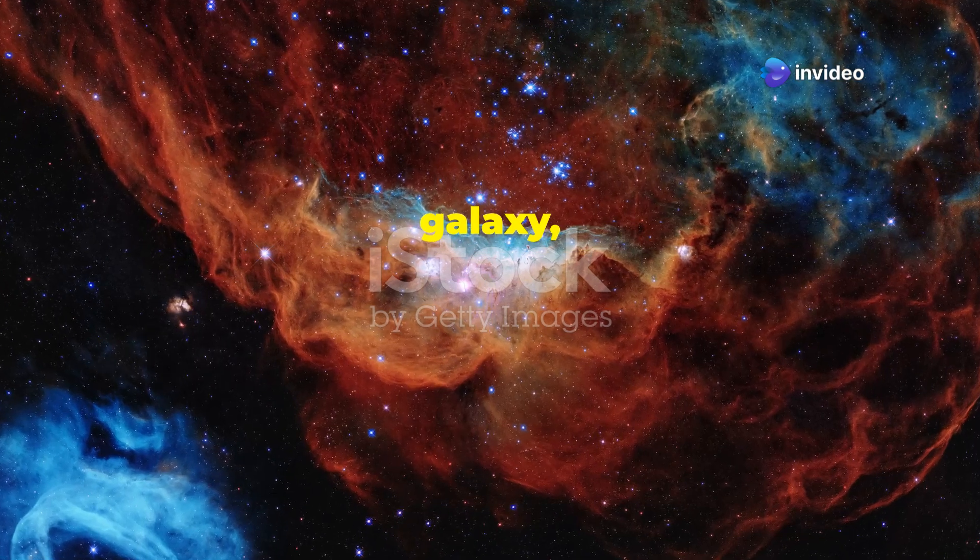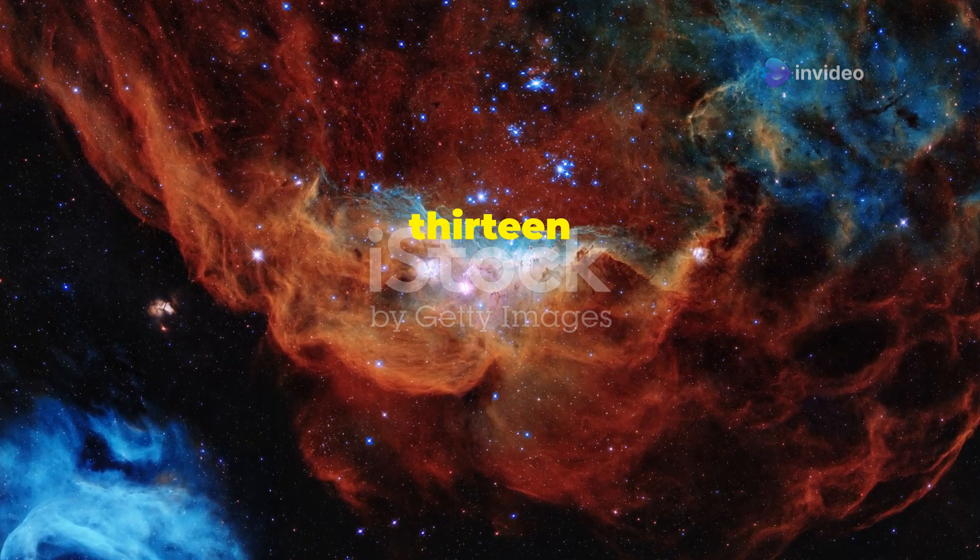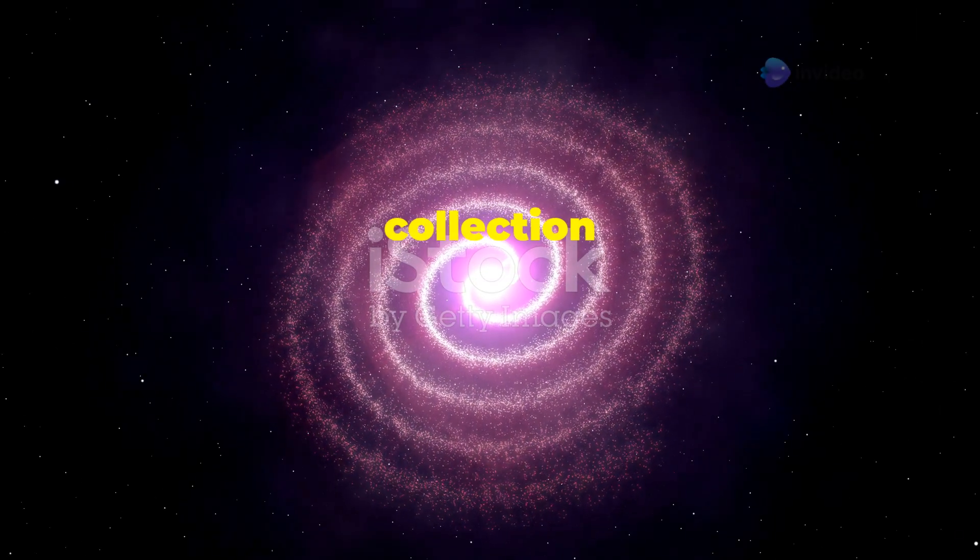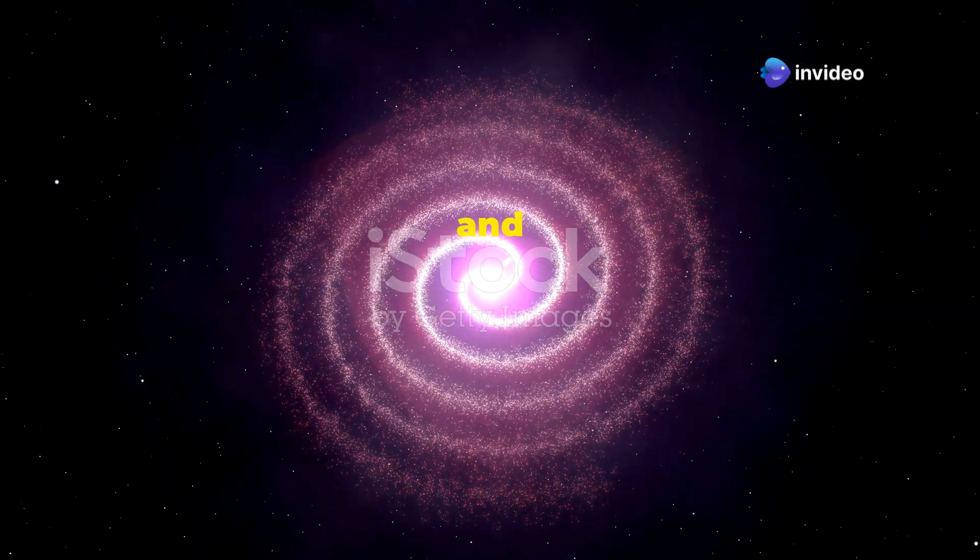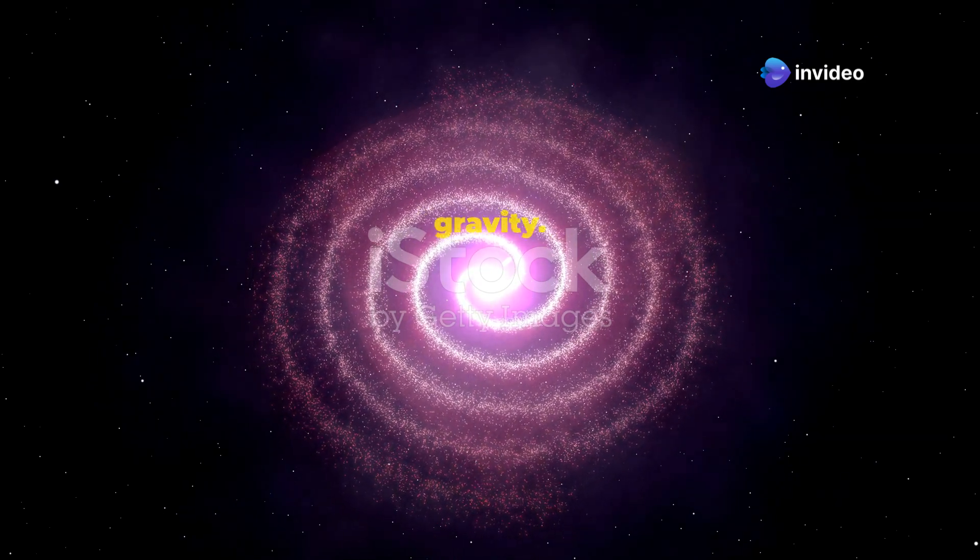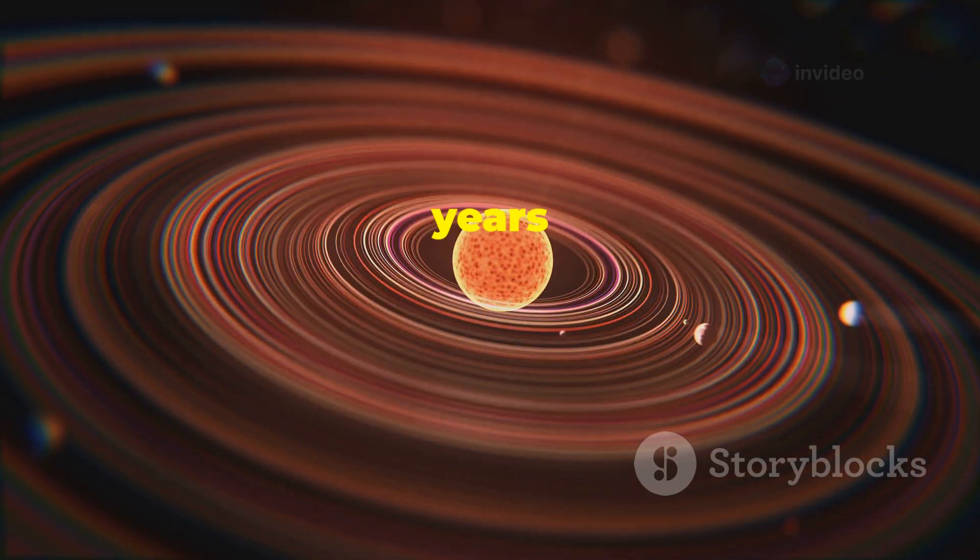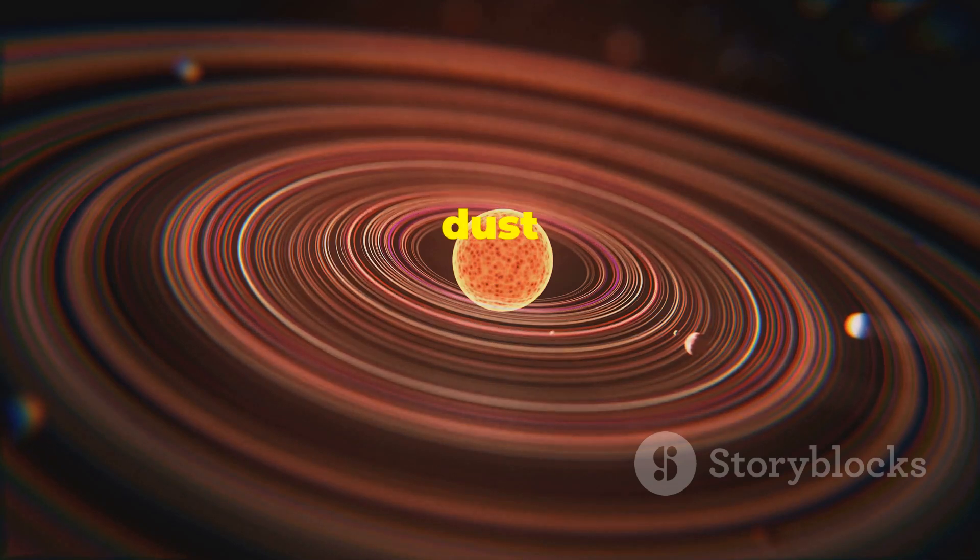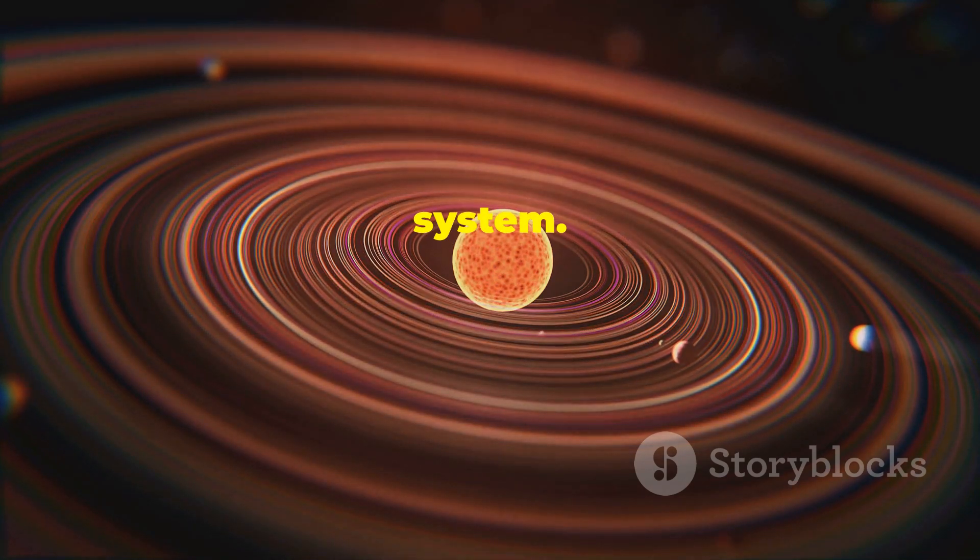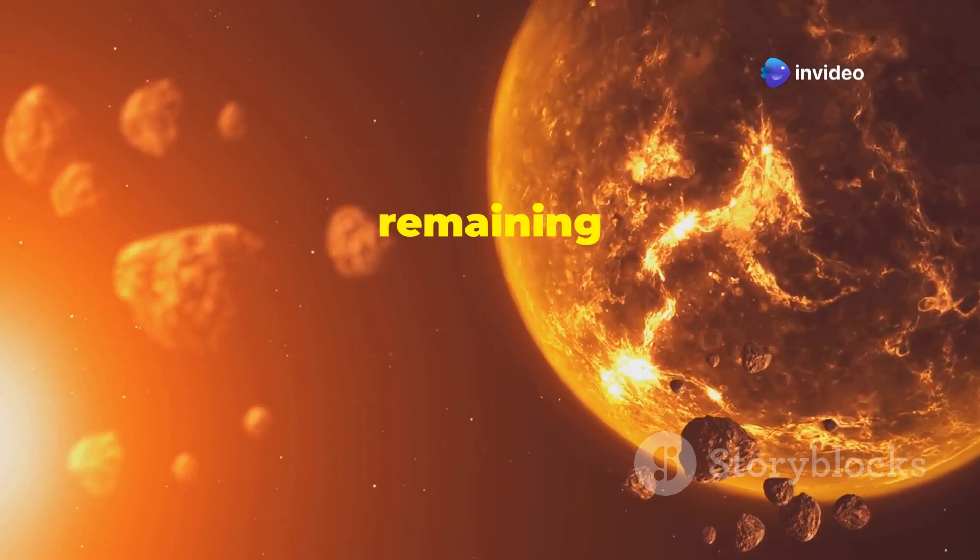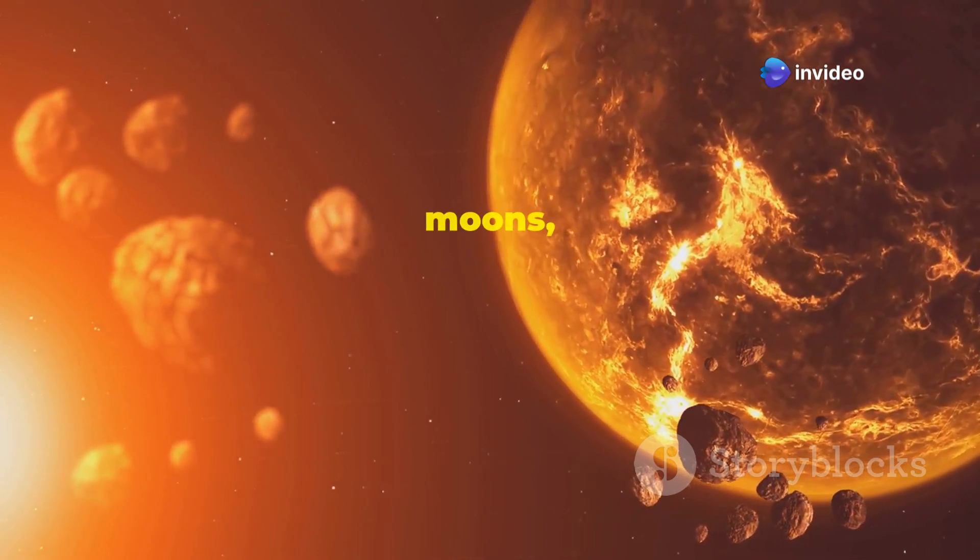Our own galaxy, the Milky Way, formed about 13.5 billion years ago, just a few billion years after the Big Bang. It's a barred spiral galaxy, a vast collection of stars, gas, dust, and planets, all held together by gravity. Within the Milky Way, about 4.6 billion years ago, a cloud of gas and dust collapsed to form our solar system. At the center of this swirling cloud, the Sun ignited, and the remaining material coalesced into planets, moons, and asteroids.